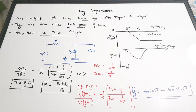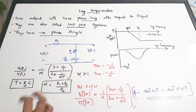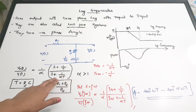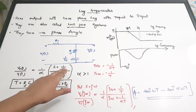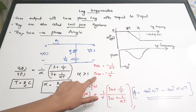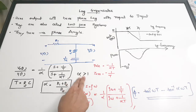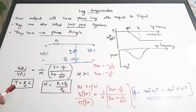The transfer function is Vout(s)/Vi(s) = (1/α)(s + 1/T) / (s + 1/αT). From this transfer function you can find the poles and zeros. By equating the denominator to zero, the pole is at s = −1/αT. The zero is at s = −1/T by equating the numerator term to zero. Also, the value of α is always greater than 1 for a lag compensator — this is an important fact to remember.